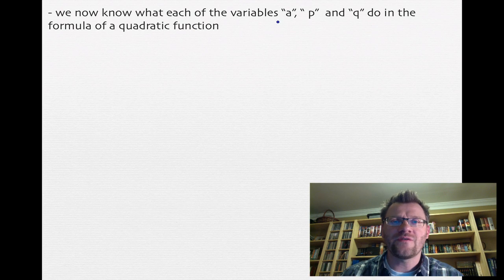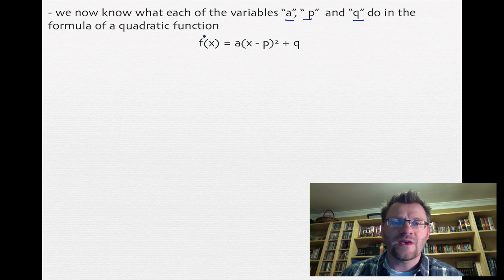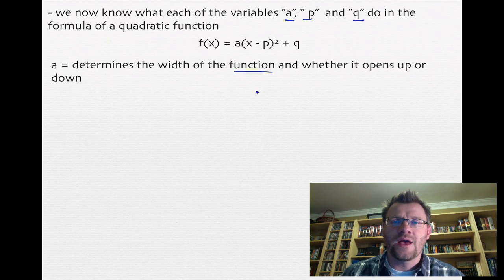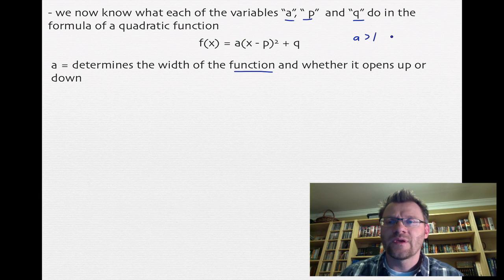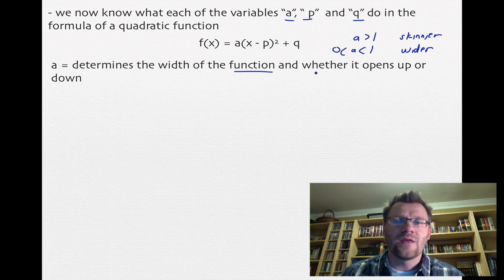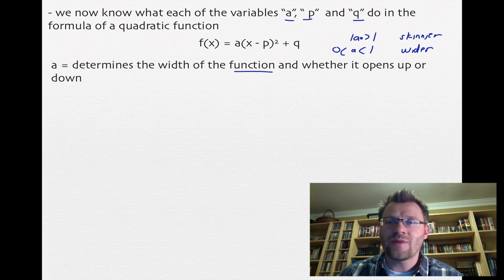We now know what each of the variables a, p, and q do in the formula f of x equals a times x minus p squared plus q. We know that a determines the width of the function and whether it opens up or down. If a is greater than 1, it's skinnier than normal. If a is between 0 and 1, it's wider than normal. If a is positive it opens up, and if a is negative it opens down — which is why they sometimes refer to the absolute value of a, since it could be a positive number greater than 1 or a negative number less than 1.